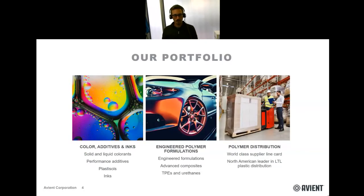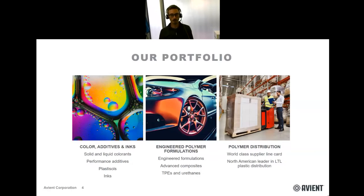On the left in this slide we have represented the colors, additives and ink business unit. The technical function here is typically the appearance of the product through color and effect, but also different additivation technologies to achieve UV resistance, oxygen scavenging or barrier functions. On the right we see our distribution business unit, which helps customers to efficiently source the correct material for their application. And in the middle you will find the engineered polymer formulations, where we find our thermally conductive plastics, but also mechanically reinforced solutions, densified materials for sound and x-ray insulation, as well as elastomers with impact absorption or vibration dampening performances.